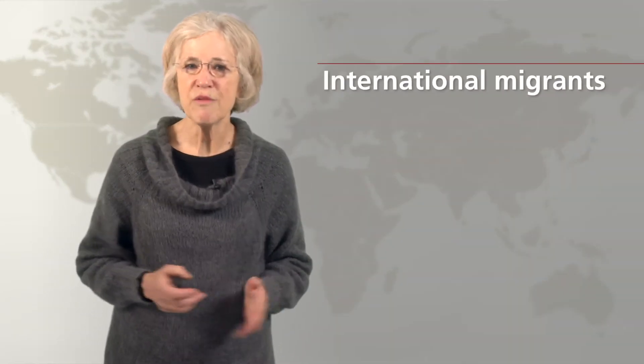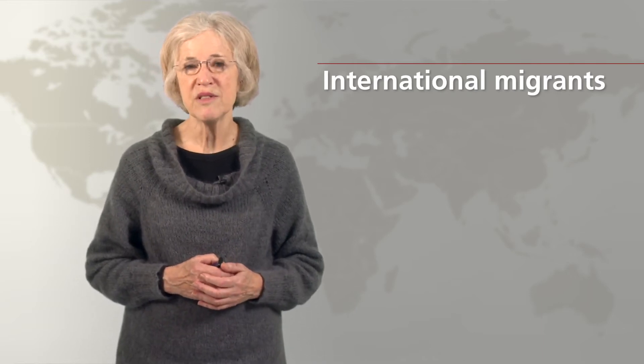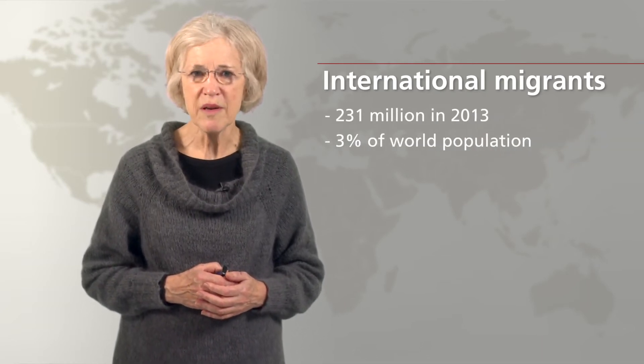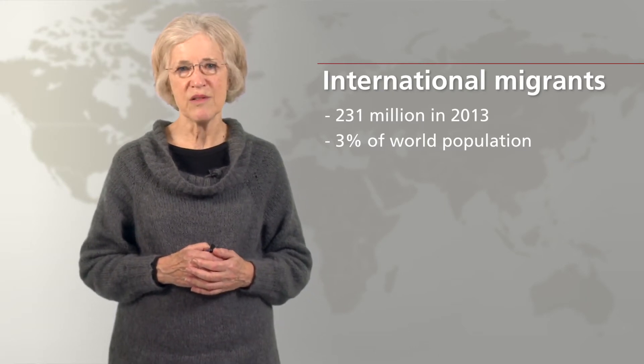Let's begin with the term international migrant — a term usually referring to persons who are residing in countries other than their country of birth. The number of international migrants was estimated to be 231 million in 2013, about 3% of world population. That proportion has stayed rather constant over the last decades. Going back to the 19th century, several countries in Europe saw up to a third of their populations emigrate — for example to North America — seeking better economic opportunities or freedom from persecution. International migration is not new, and neither are the motivations people have for migrating.